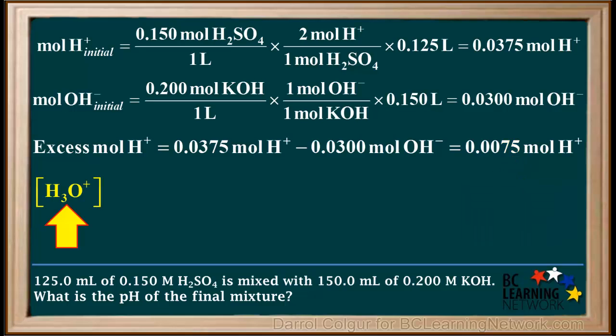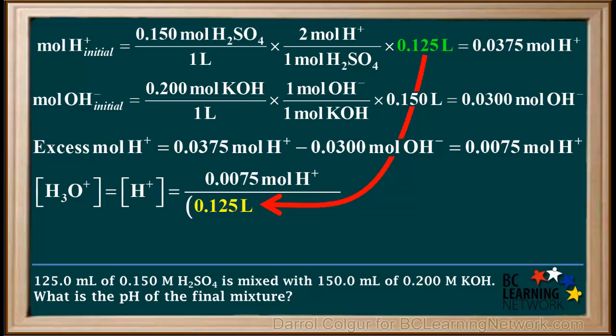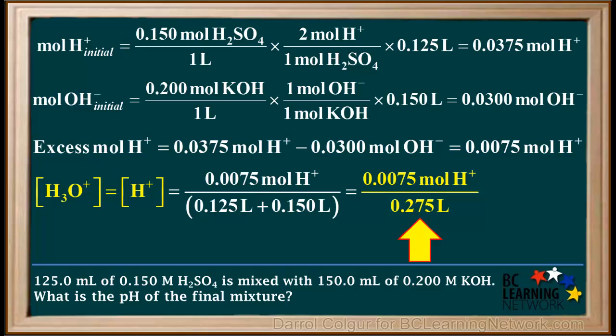The next step on the way to pH is to find the hydronium ion concentration, which is equal to the concentration of H plus. These are synonymous in chemistry dealing with aqueous solutions. The concentration of H plus is equal to moles of H plus per liter of solution. The moles of H plus is 0.0075 moles, and the total volume of the mixture is 0.125 liters of H2SO4 plus 0.150 liters of KOH. So the concentration of H plus or H3O plus is 0.0075 moles over 0.275 liters, which comes out to 0.0273 molar. We'll carry more significant figures than the two our final answer is limited to. We'll round to two significant figures at the end.